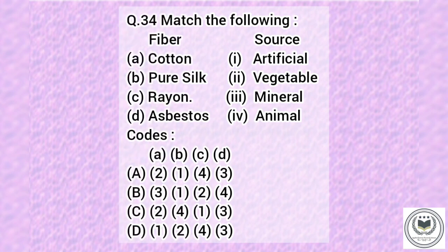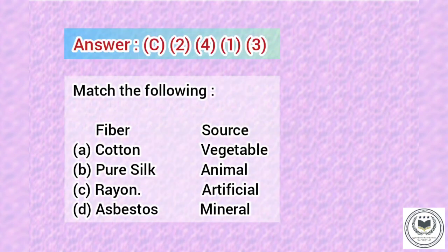Question 34. Match the following. In the fiber side, we have cotton, pure silk, rayon, and asbestos. In the source side, we have artificial, vegetable, mineral, and animal. Answer is Option C: 2413.